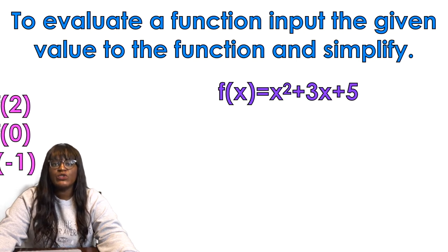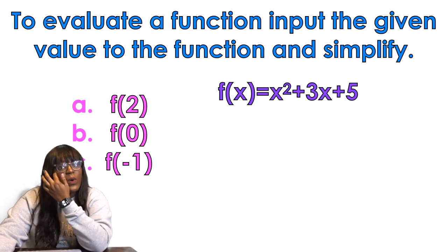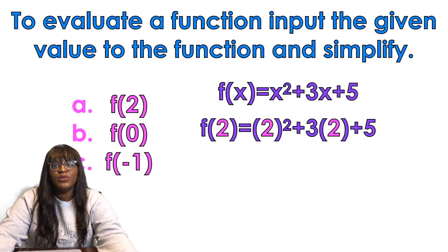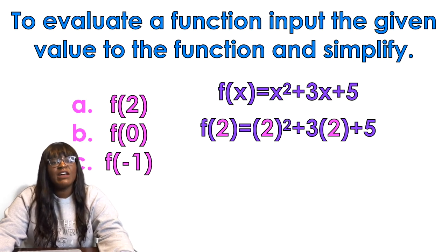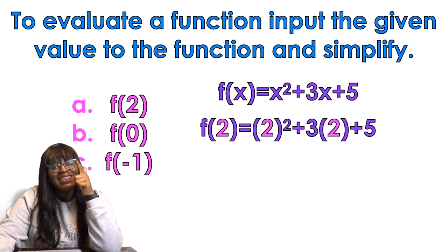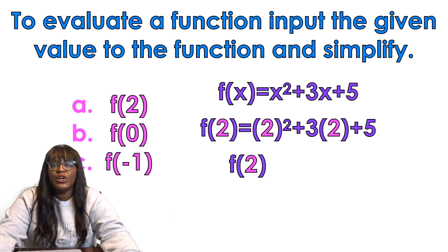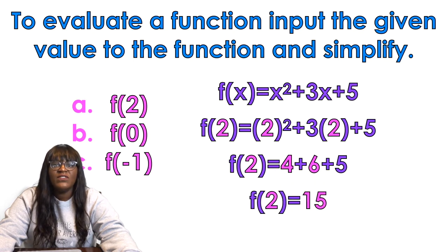So we're going to plug in 2 first. When we plug in 2 into x squared plus 3x plus 5, it's going to look like f(2) equals 2 squared plus 3 times 2 plus 5. Now remember, PEMDAS is key. We're going to do exponents first, which gives me 4, then multiplication, 3 times 2 is 6. Once I get that, I add them all together: 4 plus 6 plus 5 gives me 15.